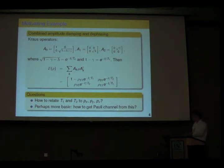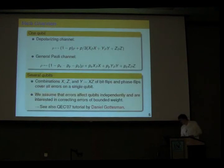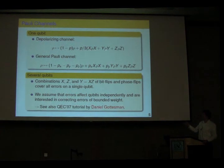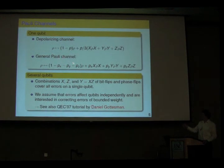How do we get a Pauli channel? There is a straightforward map using the twirling idea. A depolarizing channel has only Pauli matrices X, Y, Z as Kraus operators with equal probabilities. You can have a more general Pauli channel where you assign some probabilities for each Pauli. For several qubits you look at tensor products of Pauli matrices, implicitly assuming the noise affects qubits independently, and then try to correct errors of bounded weight.